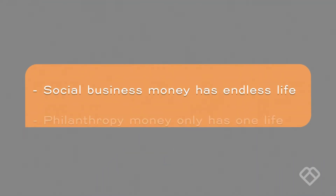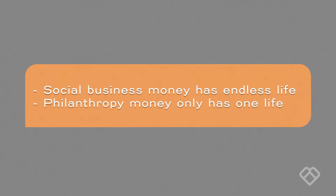But if you can put it in a business format — put the objective of philanthropy with a business engine behind it — it becomes a social business where you send the money out, get the problem solved, and the money comes back. So you can reuse the money again and again and again, endlessly. It becomes very powerful money. Social business money has endless life, whereas philanthropy money has only one life. That makes all the difference — that's the difference between philanthropy, social business, and conventional business.